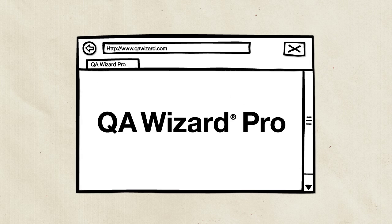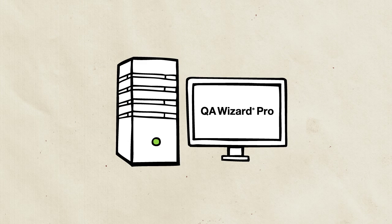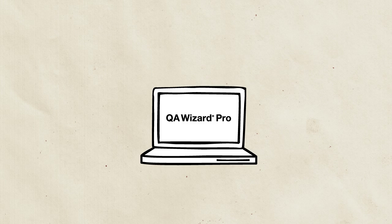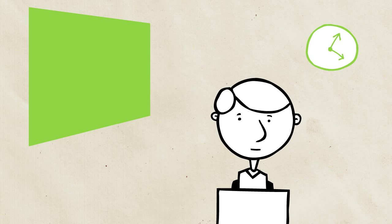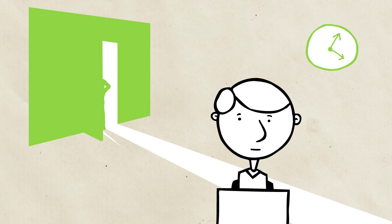QA Wizard Pro scripts are browser and machine agnostic, meaning you record them once and then run them anywhere. Testing on multiple browsers? No problem. Every script you create can be run across these browsers. Once you've recorded a script, basic changes to your application's UI shouldn't require you to spend time updating that script.